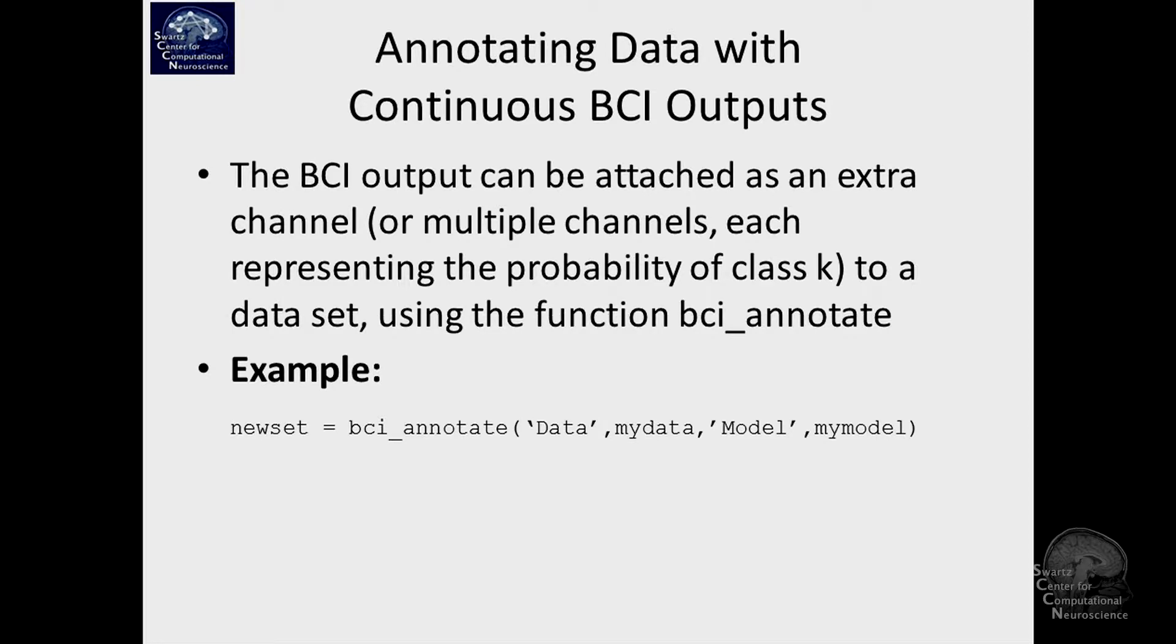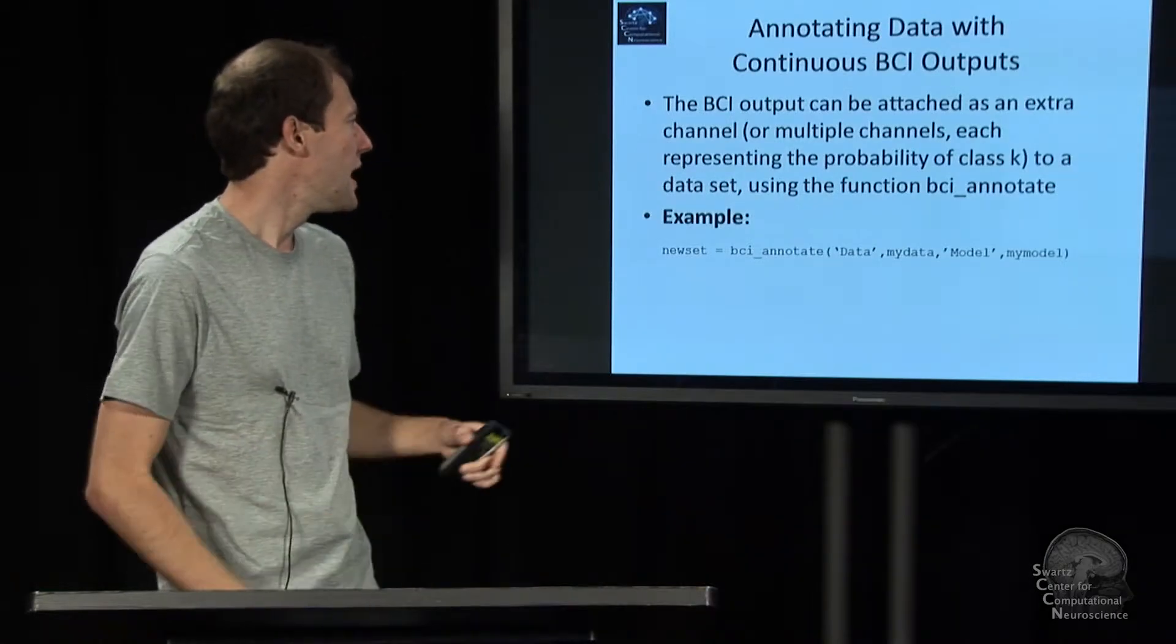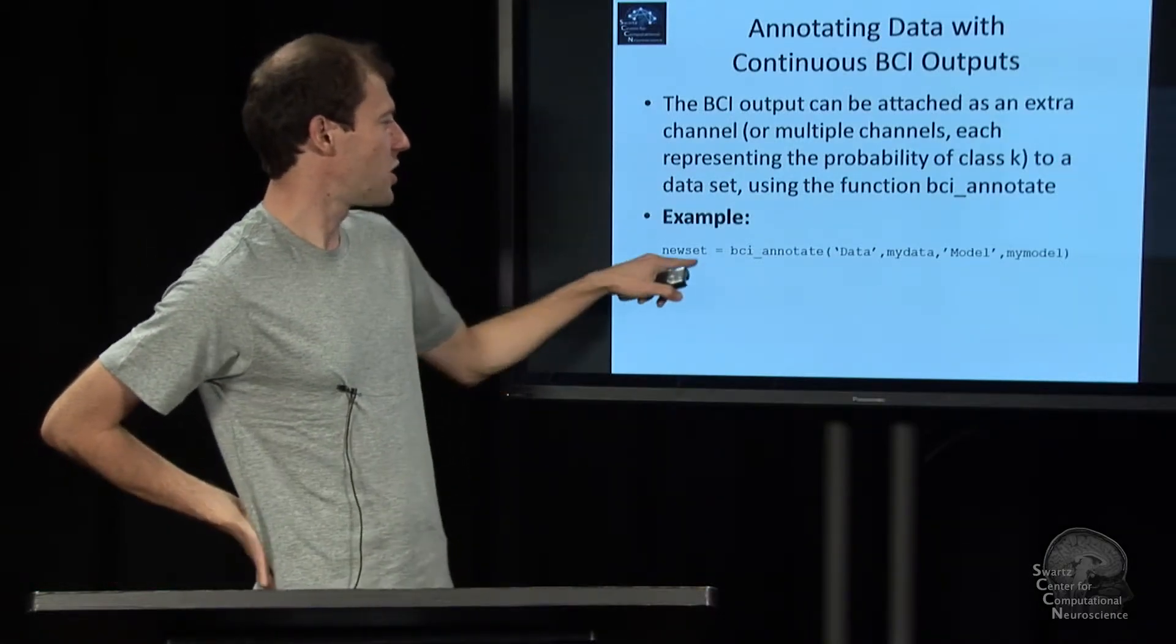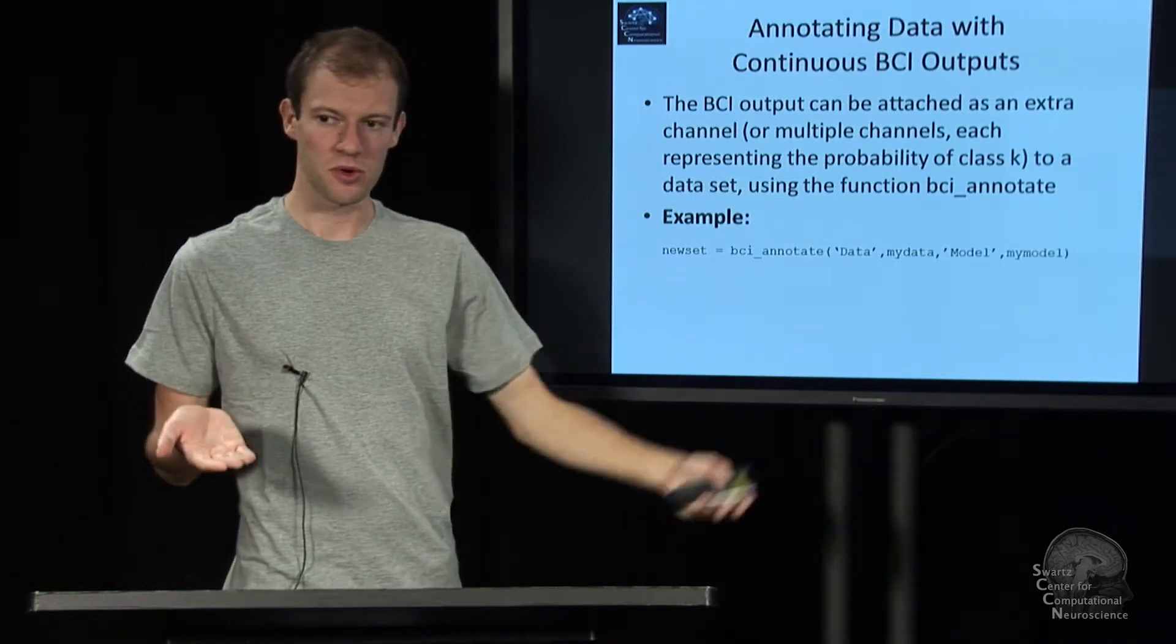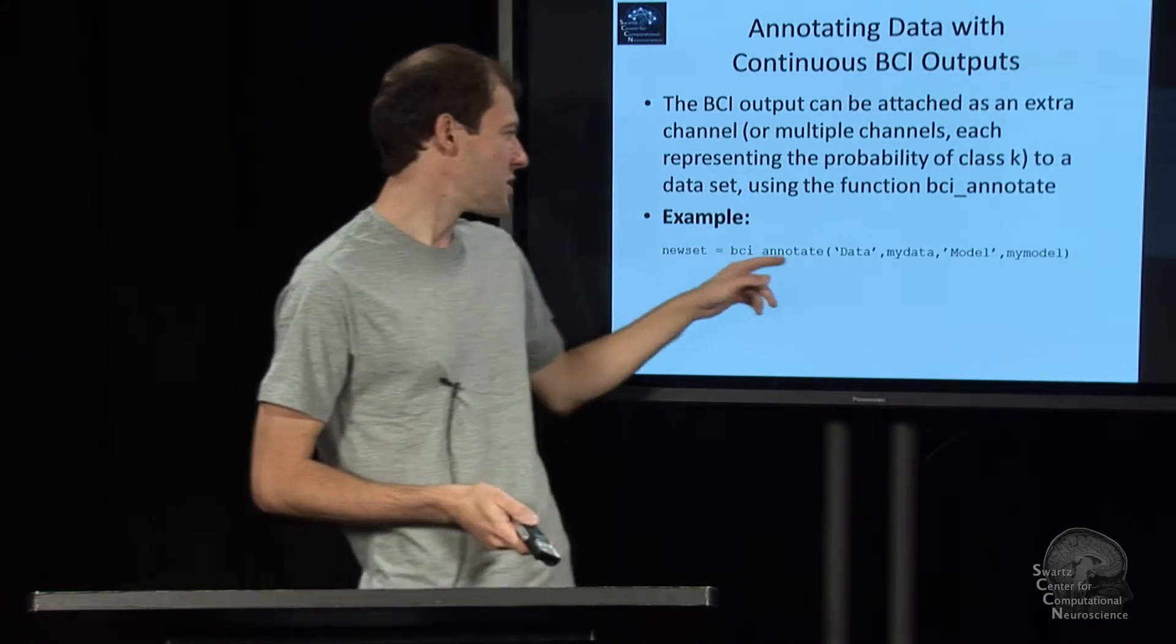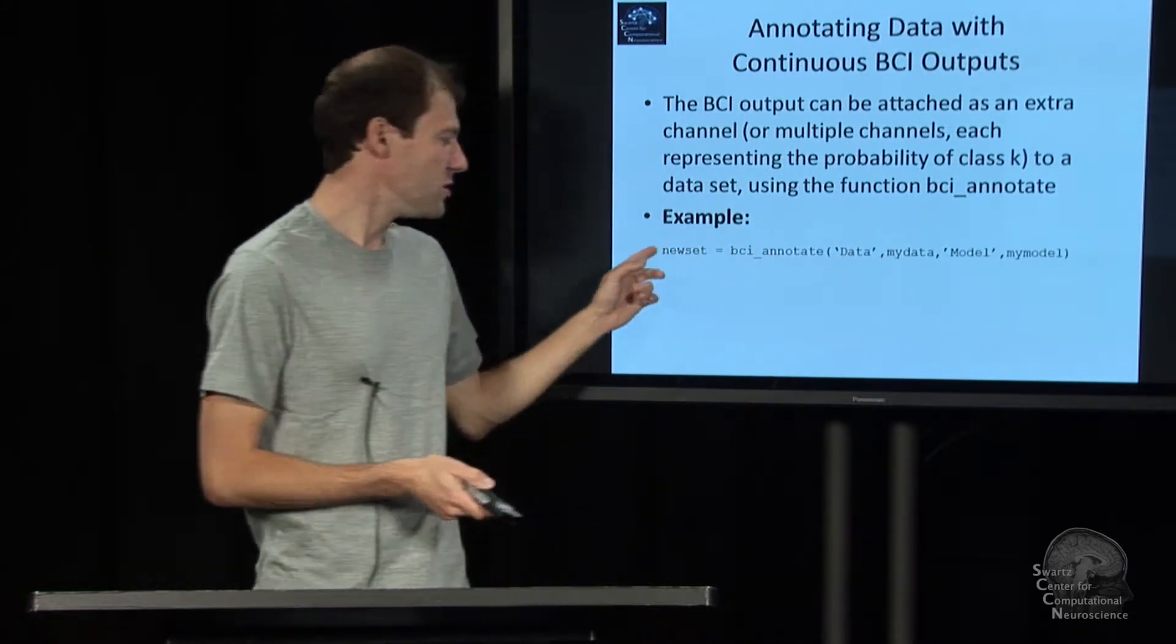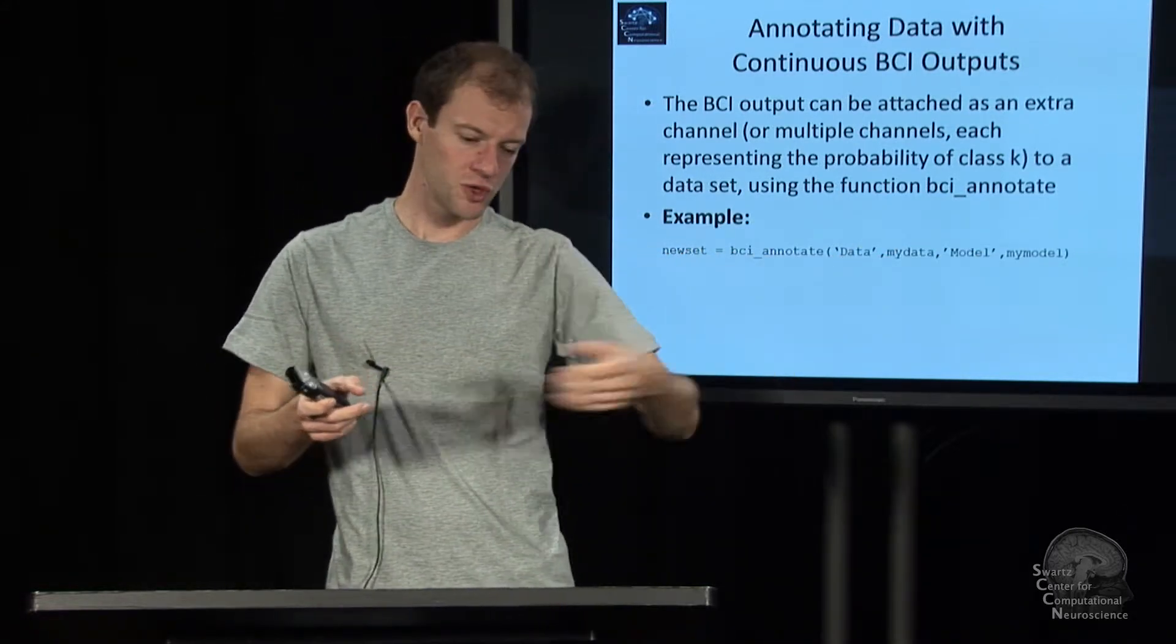And the last thing that you can do offline is maybe you want to classify not just certain markers or so. Maybe you don't even have markers. Maybe you just want to generate the time course of BCI outputs, the estimated condition or class label or continuous value for the whole time series. And the function that does this is called bci_annotate. It basically annotates the data with the estimated output of the brain-computer interface. And so you give it a data set, a model, and it'll give you a new data set with a few extra channels which encode this output.